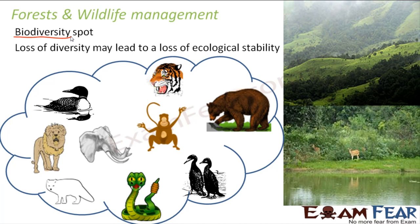Loss of diversity may lead to loss of ecological stability. We need to manage forests and wildlife, meaning protecting forests from being cut down to an unlimited extent, and protecting wildlife from being killed to the point of extinction. There have been many animals which have become extinct or are on the verge of extinction because of too much killing. Similarly, too much cutting of trees will bring an end to forests.